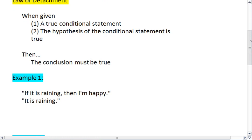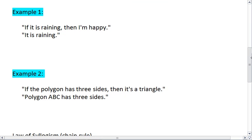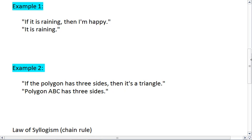Let's look at the first example. If it is raining, then I'm happy. It is raining. So here, we are given what we assume to be true statements. If it is raining, then I'm happy. It is raining. That must mean that our logical conclusion is I'm happy.